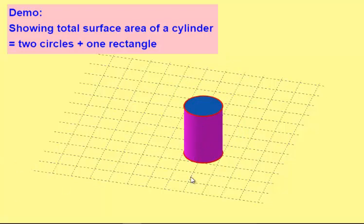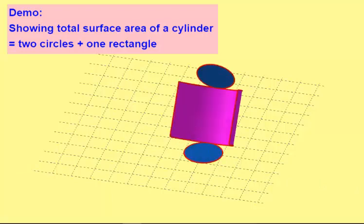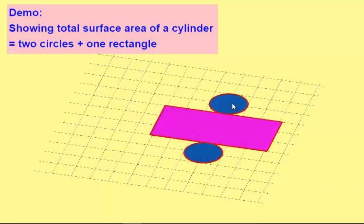Again, unfolding shows two circles and a rectangle. The total surface area of a cylinder equals two circles and one rectangle.